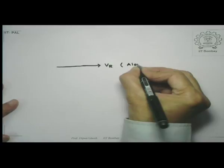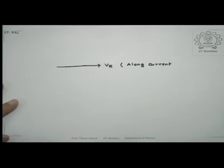If you recall, for an inductor, the current lags the voltage — another way of saying that is, for an inductor, voltage leads the current by 90 degrees. So if in the same diagram I am drawing the voltage across the inductor, I will draw it perpendicular. So this is VL.